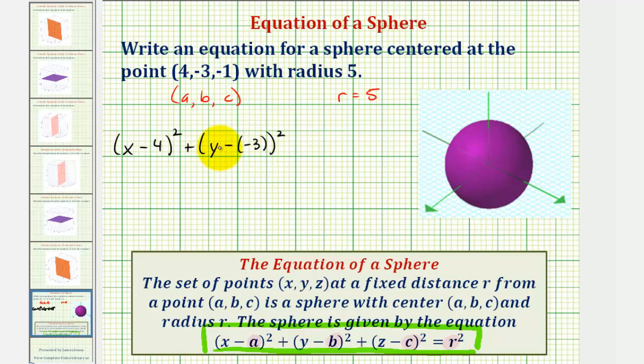We'll simplify this in the next step. Plus the quantity (z - (-1))² equals r² or 5².